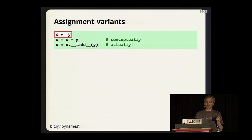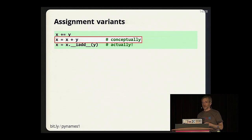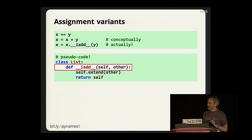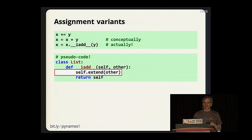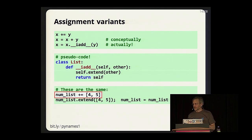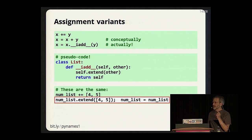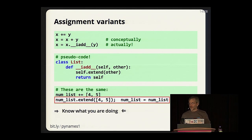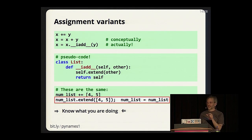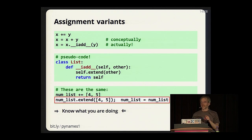There are also other assignment variants. When we say `x += y`, conceptually that's the same as `x = x + y`, but it actually calls a method on x called `__iadd__`, passing y, which means the type of x can decide what actually happens. Lists implement `__iadd__` by using their own extend method to extend themselves in place, and then returning themselves. So `numlist += [4, 5]` extends it with 4 and 5 and then does a no-op assignment of itself onto itself. It looks like a rebinding, but you're really just mutating something in place. Interestingly, the Python docs don't mention this behavior.